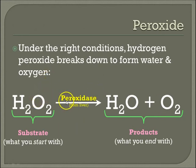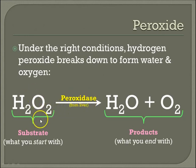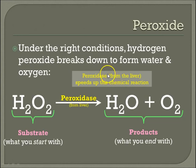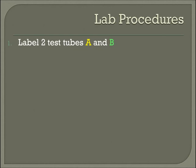Under these right conditions, with the peroxidase coming from the liver, it's going to break down my substrate, hydrogen peroxide, into water and oxygen — my products. Peroxidase — ASE means it's an enzyme — from the liver is what actually speeds up this chemical reaction.